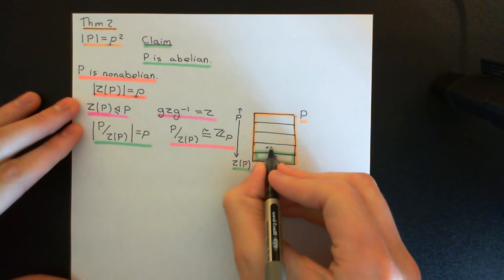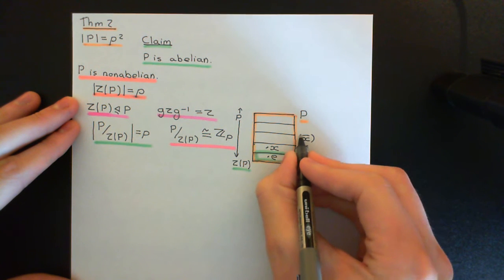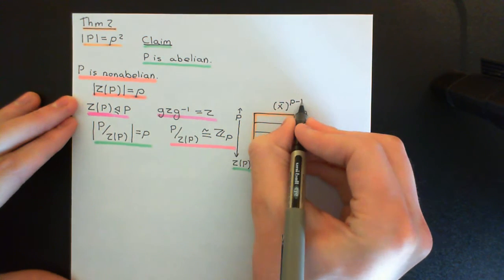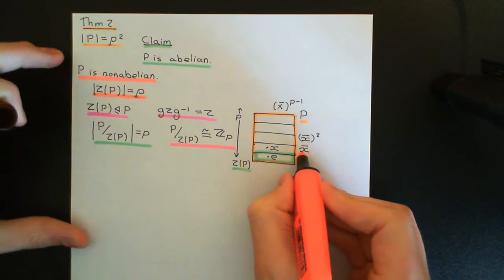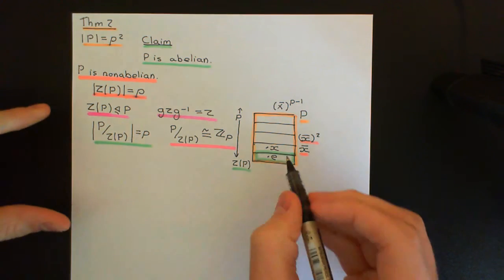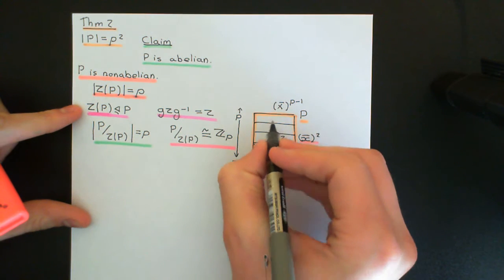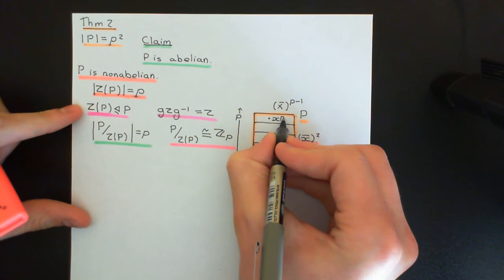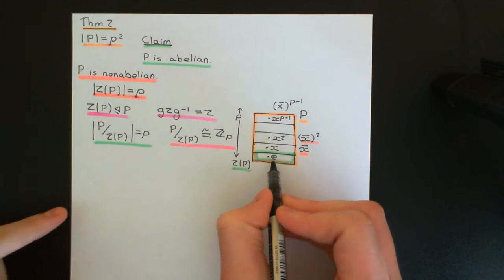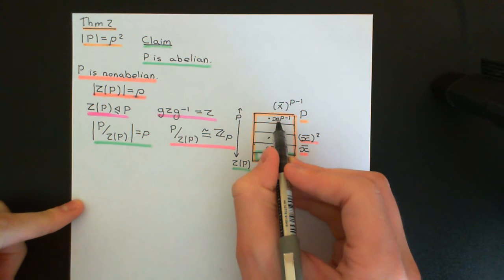Think about how we construct x̄²: we take a representative x from its coset and square it using the composition law in the original group. So x̄² actually contains x², x̄³ contains x³, and x̄^(P−1) contains x^(P−1). The identity coset contains x⁰, the identity element. So all cosets are characterized by these powers of x.